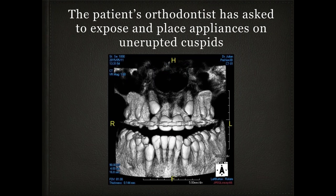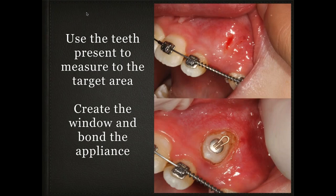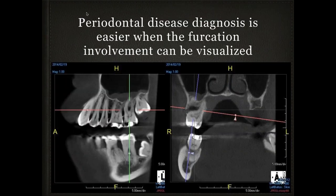In this case an orthodontist referred a patient back to me to expose a couple of cuspids so he could place brackets on them. We took the cone beam to see if they were palatally or buccally positioned, which allowed us to identify the location of the tooth, expose it, and place a button for the orthodontic mechanics. I use a CO2 laser, which allows me to get in very cleanly — no bleeding, no fluid — making it a good environment for any kind of bonding procedure. We did the same thing on the other side.